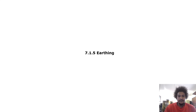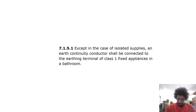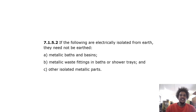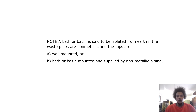Earthing: except in the case of isolated supplies, an earth continuity conductor shall be connected to the earthing terminals of Class 1 fixed appliances in a bathroom. If the following are electrically isolated from earth, they need not be earthed: metallic baths and basins, metallic waste fittings in baths or shower trays, and other isolated metallic parts. Note: a bath or basin is said to be isolated from earth if the waste pipes are non-metallic and the taps are wall-mounted or bath/basin-mounted and supplied by non-metallic piping.